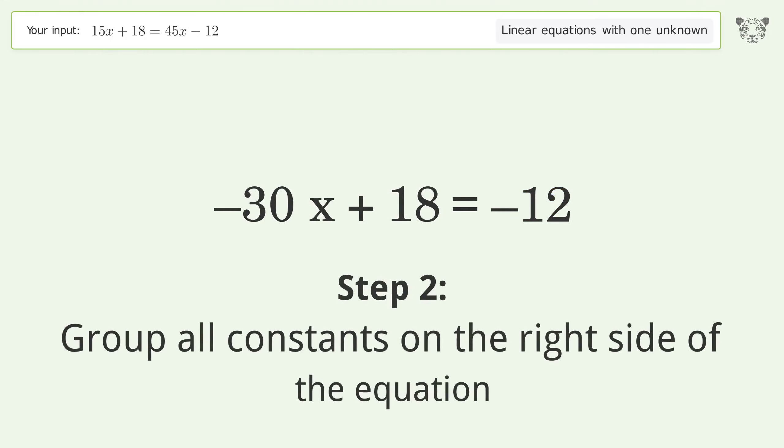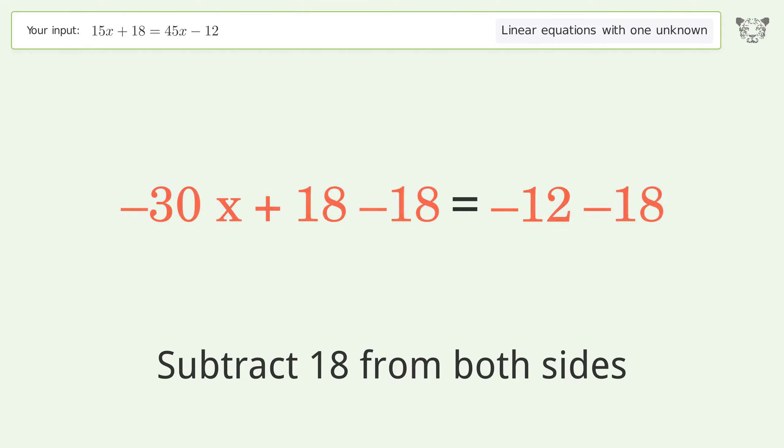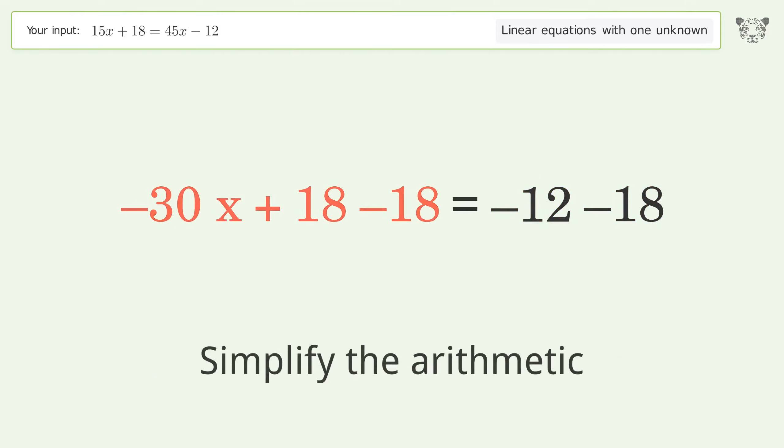Group all constants on the right side of the equation. Subtract 18 from both sides. Simplify the arithmetic.